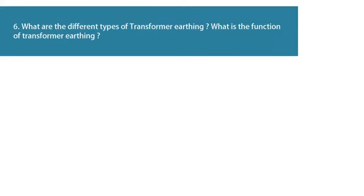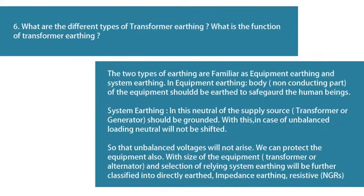Question 6: What are the different types of transformer earthing and what is its function? The two types of earthing are equipment earthing and system earthing. In equipment earthing, the body and non-conducting parts of the equipment should be earthed to safeguard human beings. In system earthing, the neutral of the supply source — transformer or generator — should be grounded so that in case of unbalanced loading, the neutral will not be shifted and unbalanced voltages will not arise. Depending on the size of the equipment and selection of the relay system, earthing is further classified into directly earthed, impedance earthing, resistive earthing (NGRs).